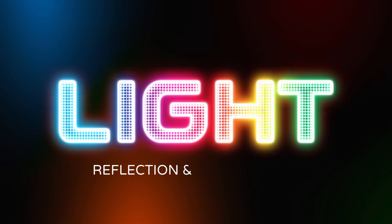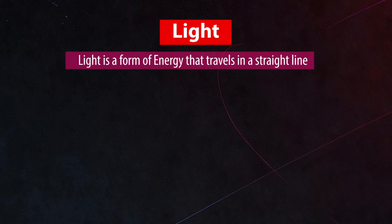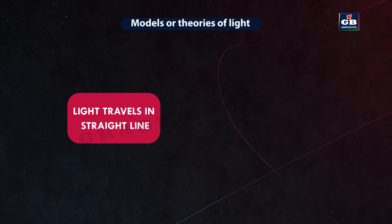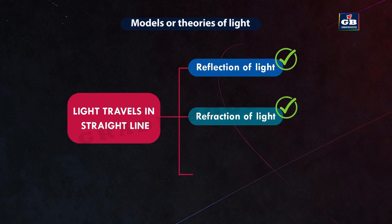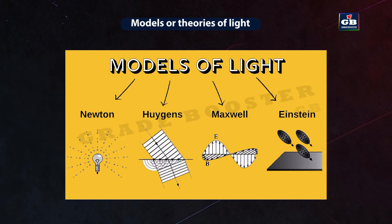Light, reflection and refraction. Light is a form of energy that travels in a straight line. Light traveling as straight rays explains phenomena like reflection and refraction, but fails to explain phenomena like diffraction of light. To explain all phenomena, many theories have been put forward by different scientists.